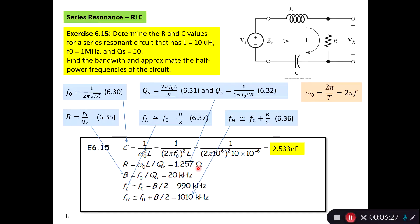Then we can find the bandwidth B based on this equation. We have the resonance frequency and we have the quality factor. So putting in the resonance frequency is 1 MHz and the quality factor is 50, we get 20 kHz out.